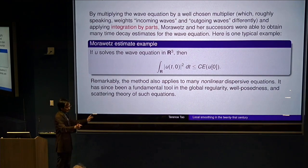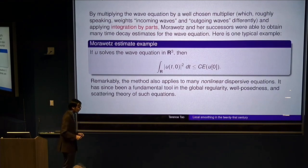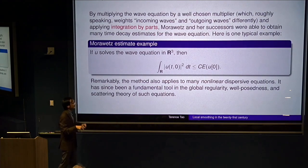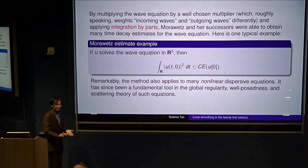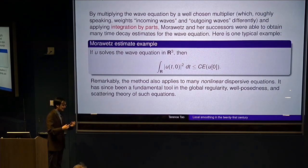incoming waves get a negative weight. Waves that go towards the origin get a negative weight, but waves that go away from the origin get a positive weight.